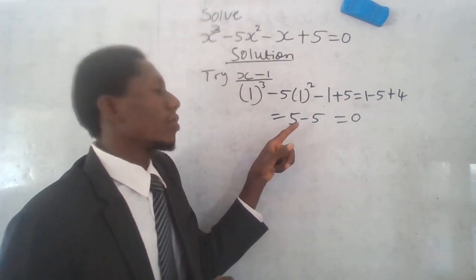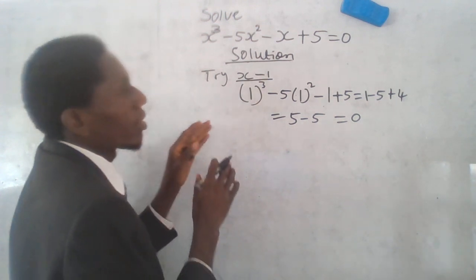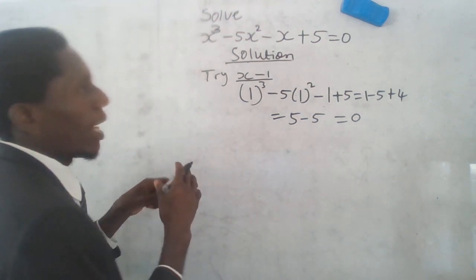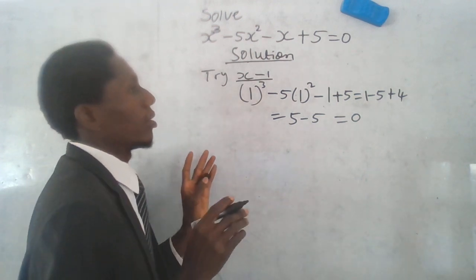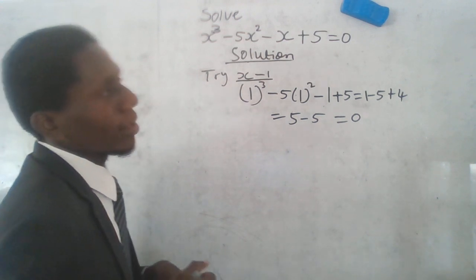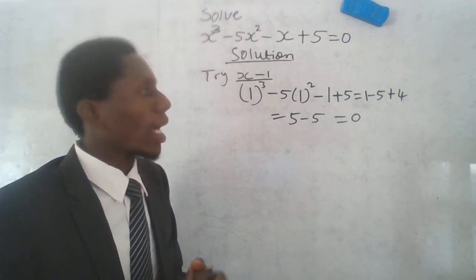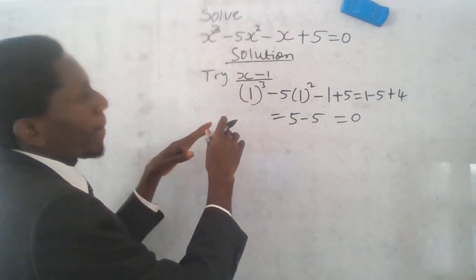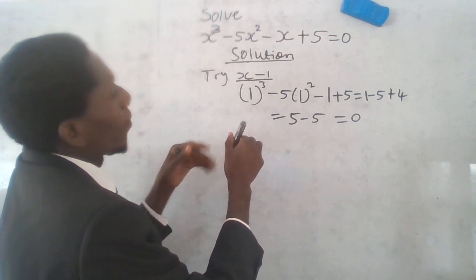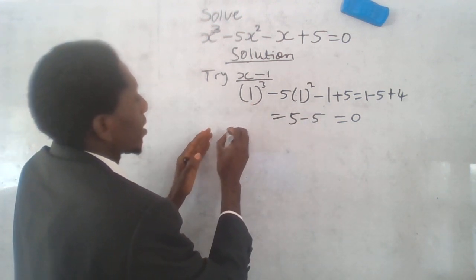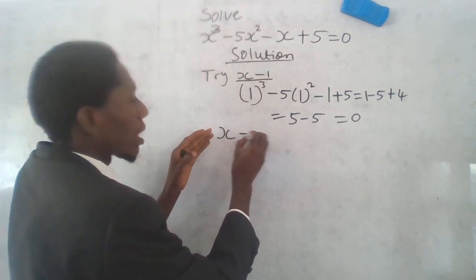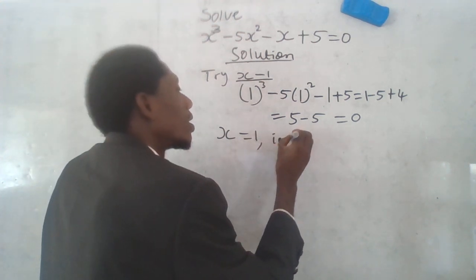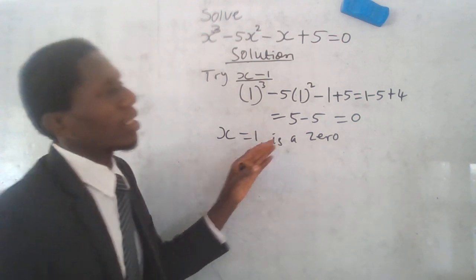This will be equals to one minus five plus four. So you can see that if you are able to get it this way, let's see what the result will give us. This means that I'm going to have five minus five, which will give us zero. But this is not the solution for this problem. Because x is a zero of the function in this problem.